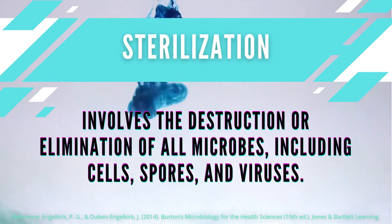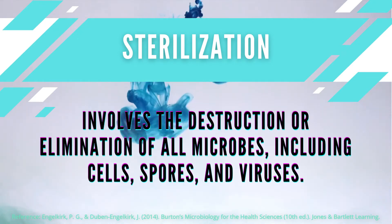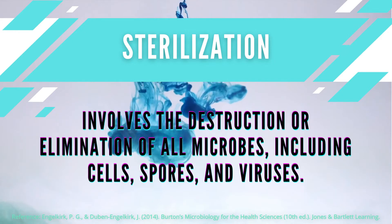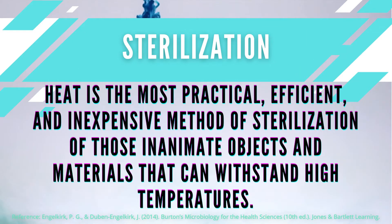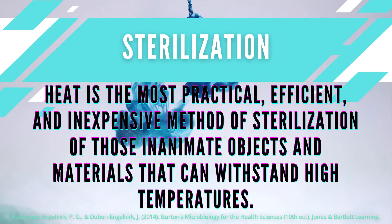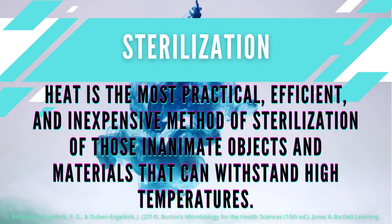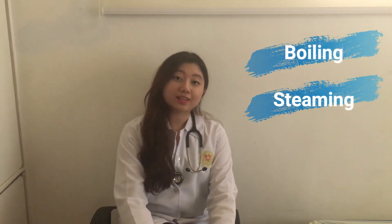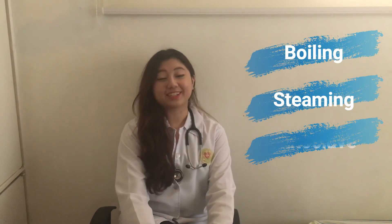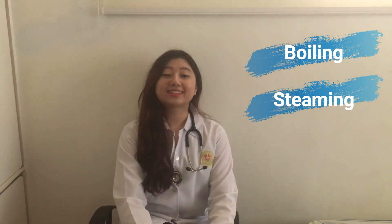Sterilization involves the destruction or elimination of all microbes, including cells, spores, and viruses. Heat is the most practical, efficient, and inexpensive method of sterilization of inanimate objects and materials that can withstand high temperatures. Moist heat methods of sterilization include boiling, steaming, and using an autoclave.